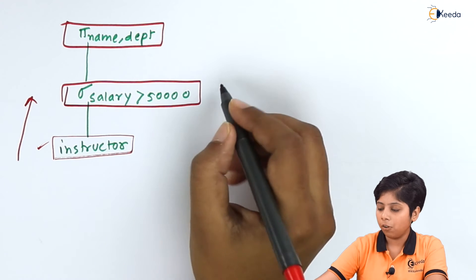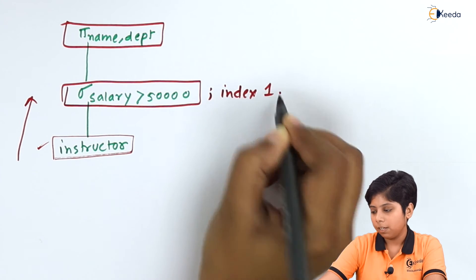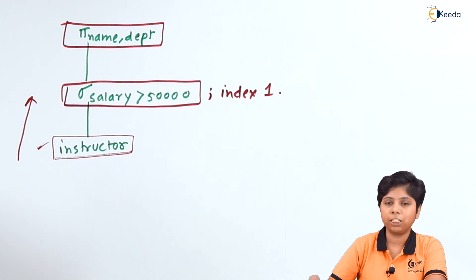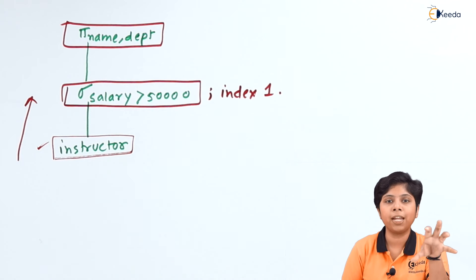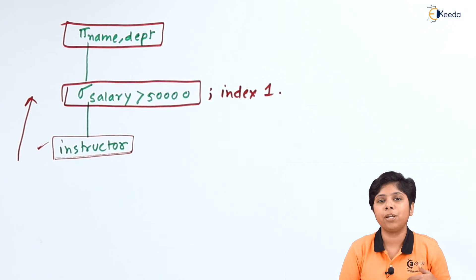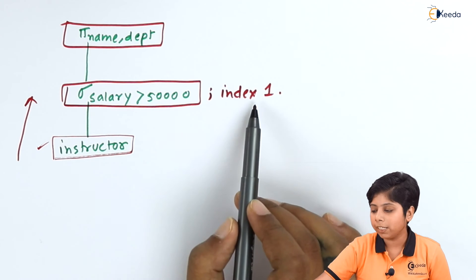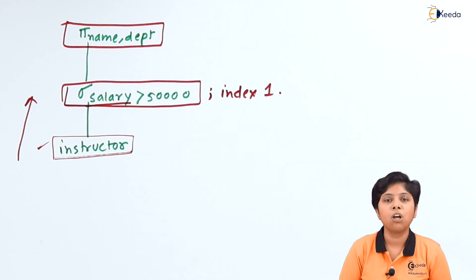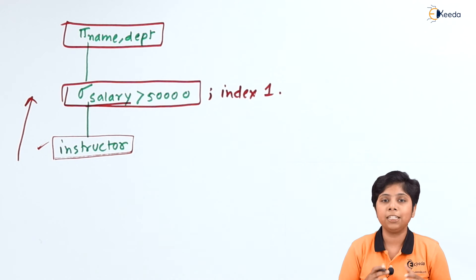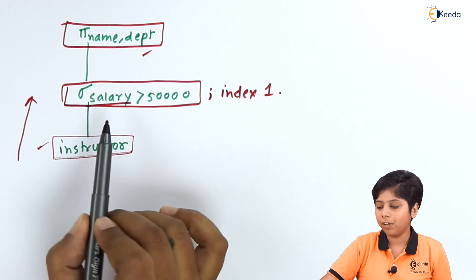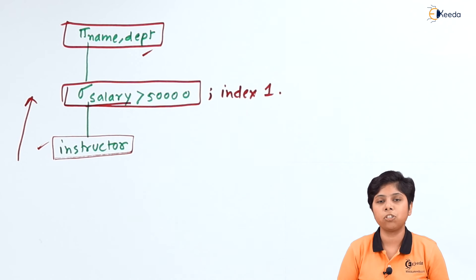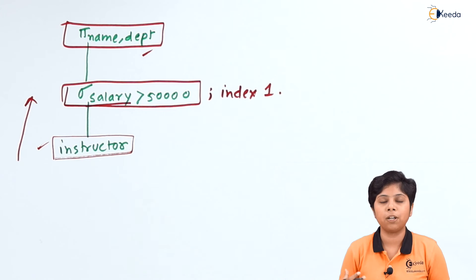If we create an index over the selection operation — index 1 — all selections are assigned an index keyed on salary. So salary 51,000, 55,000, 57,000 each has a corresponding indexed entry. Creating an index on the selection takes the attribute on which selection happens as the index attribute, and uses it for the projection operation. When salary is greater than 50,000, the index groups salary values like 51,000, 52,000, 55,000, and so on.